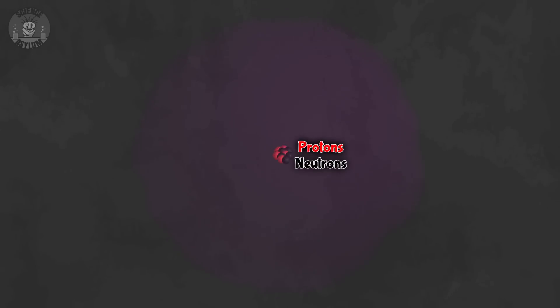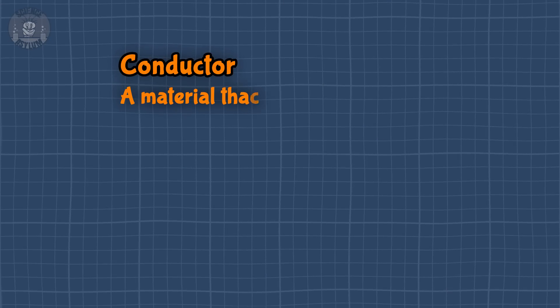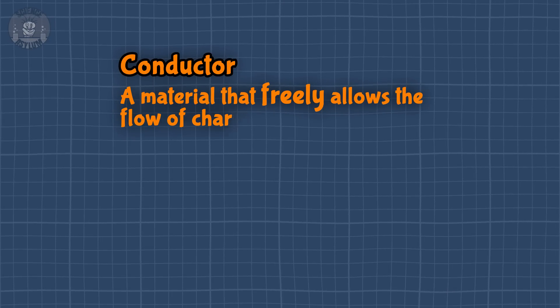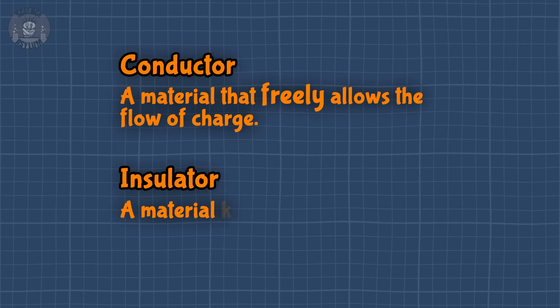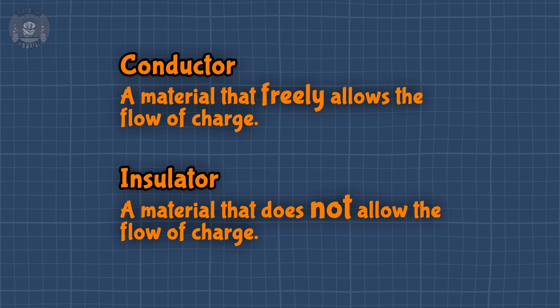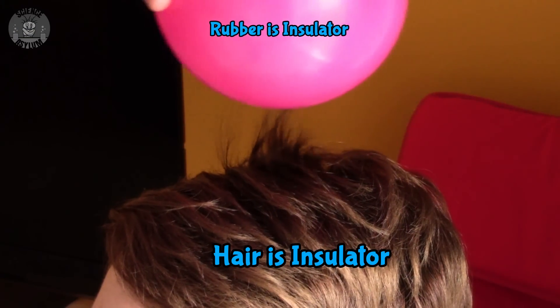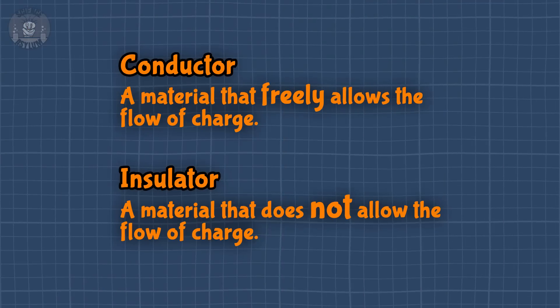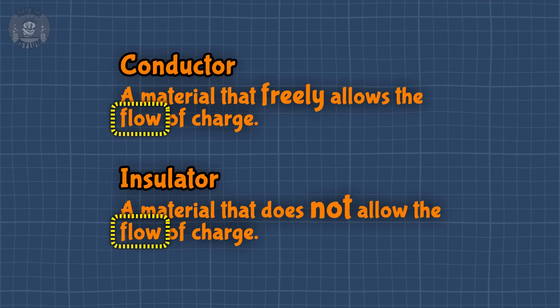First, materials are made of atoms — a bunch of protons and neutrons surrounded by a cloud of electrons. Those electrons are the lighter, looser particles, so they do the moving in materials. Second, we like to divide materials into two categories: conductors and insulators. A conductor is a material that freely allows the flow of charge. An insulator is a material that does not allow the flow of charge. Either type of material can become charged. What matters is whether or not the charge can move once it's there.